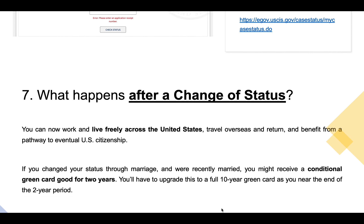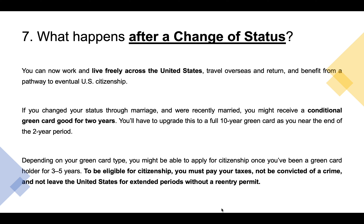After you change your status, the exciting day arrives and you receive your green card in the mail. You can now work and live freely across the United States, travel overseas and return, and benefit from a pathway to eventual U.S. citizenship. If you changed your status through marriage and were recently married, you might receive a conditional green card good for two years, which you'll need to upgrade to a full 10-year green card near the end of that period. Depending on your green card type, you might be able to apply for citizenship once you've been a green card holder for three to five years, provided you pay your taxes, are not convicted of a crime, and don't leave the U.S. for extended periods without a re-entry permit.